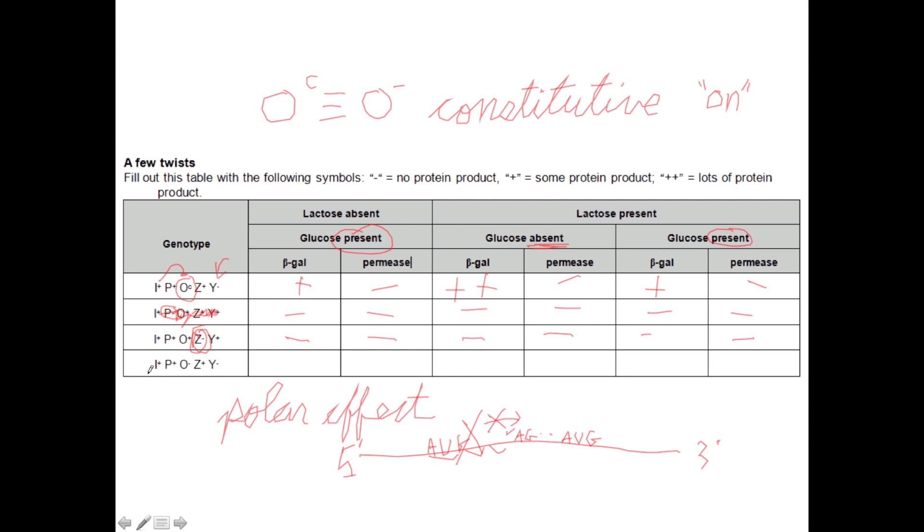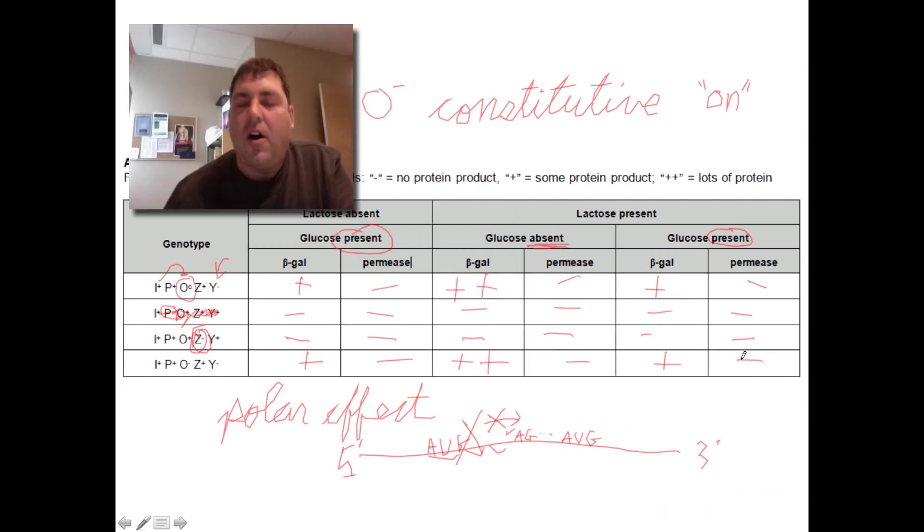For our last example here, we've got a normal promoter, so I didn't give you any freebie there. We've got a good I^- or I^+, a repressor protein here, and I've got an O^-. Now, I told you before that a constitutive operator region and an O^- are the same thing, and you will recognize that these two are exactly the same. So in this case, we just put the same logic as we did for the first line. And that should be all you need to know.